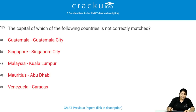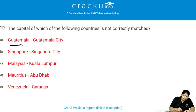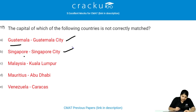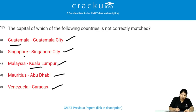The capital of which of the following countries is not correctly matched? The capital of Guatemala is Guatemala City, the capital of Singapore is Singapore City, the capital of Malaysia is Kuala Lumpur, and the capital of Venezuela is Caracas. But the capital of Mauritius is not Abu Dhabi — it is Port Louis.